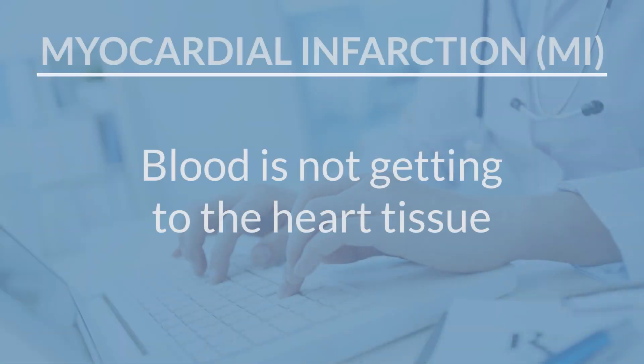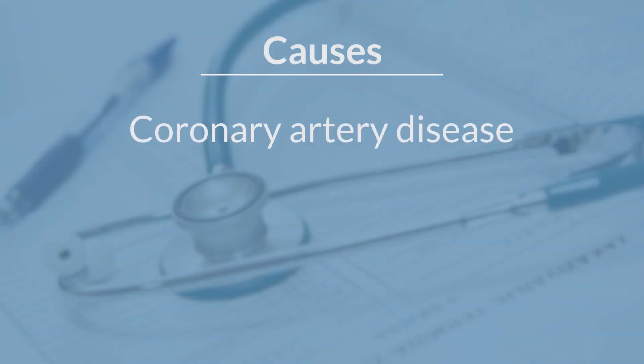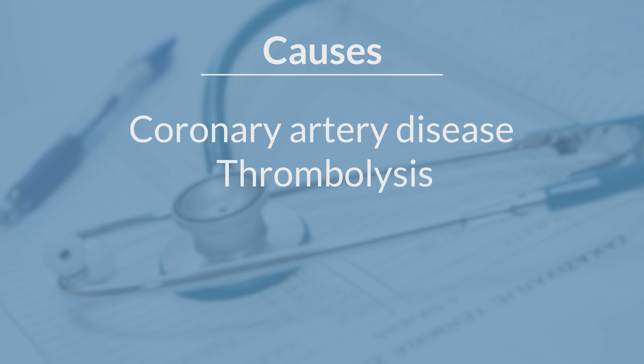Let's start with an MI or myocardial infarction. It's a vascular issue — blood is not getting to the heart tissue. Without blood and oxygen, we have tissue death to the heart. This can happen because of coronary artery disease — an occlusion in the vessel or thrombosis. Those are usually our biggest causes. Having a clot in there, we're occluding blood flow. Blood can't get to the heart and tissue death happens.